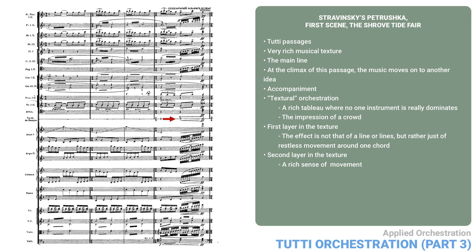Note the changes in the last bar on page 13. Stravinsky adds a tambourine roll. The cellos are added to the tremolo accompaniment. Violins, then flutes, clarinets, bassoons, harps, and violins all have a rushing 32nd note scale. On the last beat, all the motion stops right into a climactic chord. So the trombones enter here as well. This climax proves to be the beginning of the next scene.